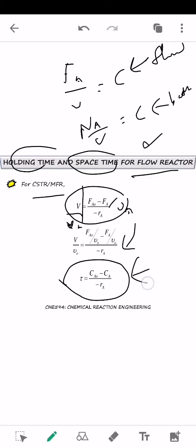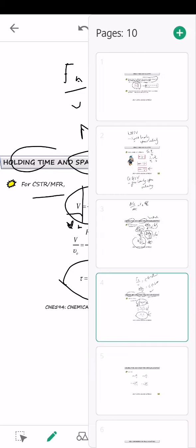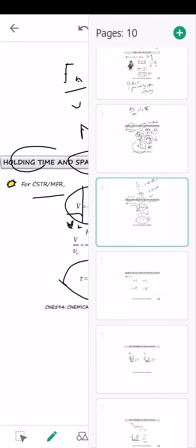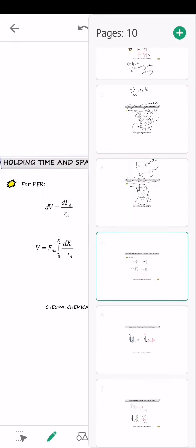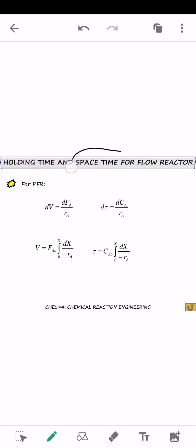So, this is how you are going to find the tau for CSTR. So, now let's have a look at how to find the tau for PFR.